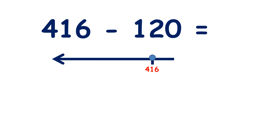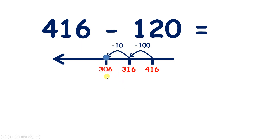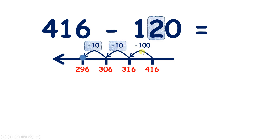Now we have 416 minus 120. If we take away 100, we get to 316. Now we need to take away our two 10s. Taking away one 10 gets us to 306, and then taking away another 10 gives us 296. So we subtracted two 10s.